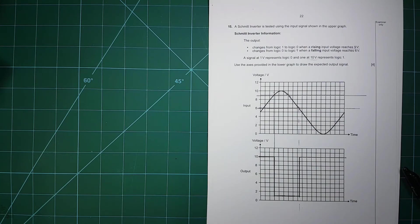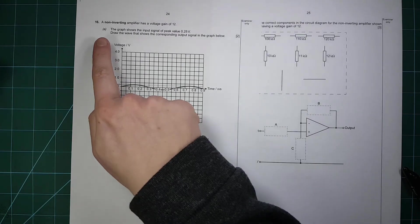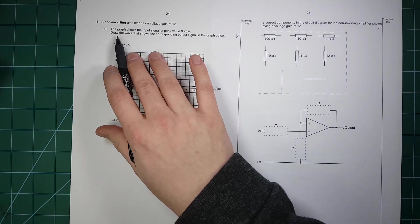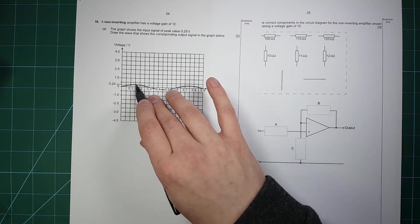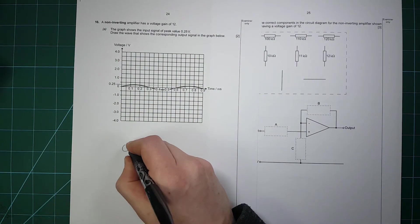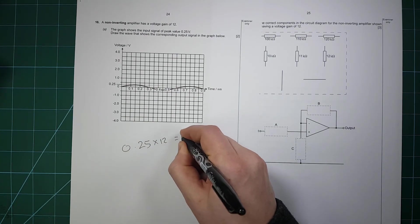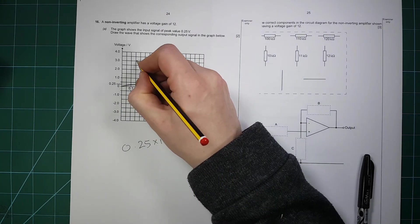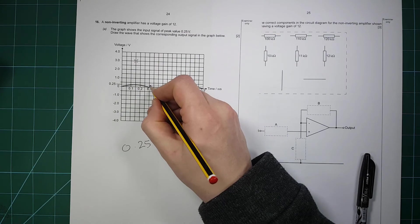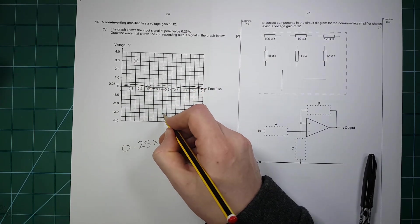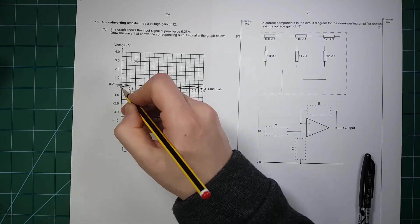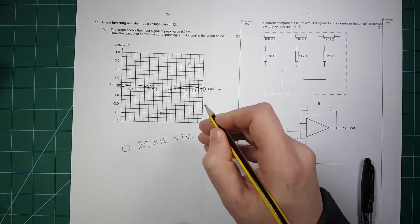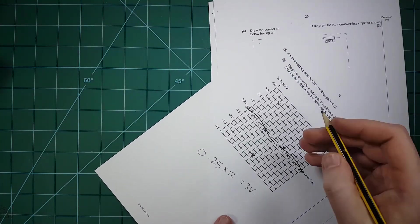A non-inverting amplifier has a voltage gain of 12. The input graph has a peak of 0.25 V. Draw the output: 0.25 × 12 = 3 V, so it peaks at 3 V. It's non-inverting, so the output goes the same way: +3 V at the positive peak, −3 V at the negative peak. The easiest way to do these is to just turn the page around.